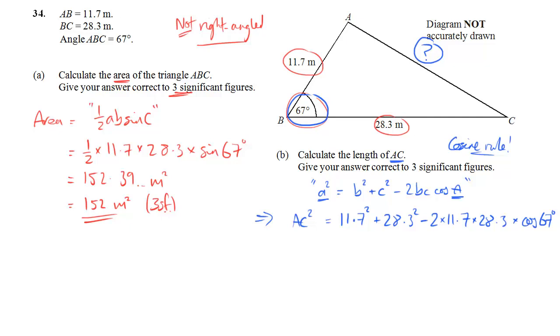So we can actually just put the whole of the right hand side into our calculators, as long as we're careful about it. So AC squared, when you work it out, comes to 679.03, and it goes on and on and on. Leave that in your calculator,